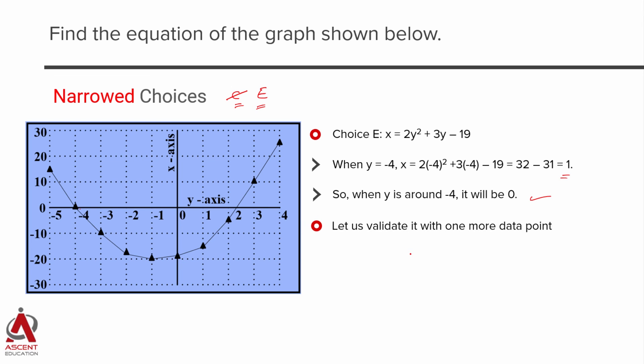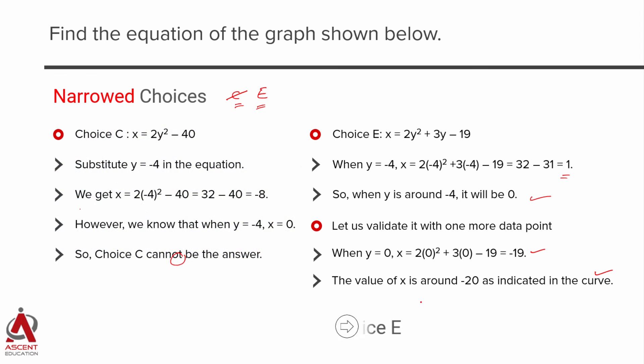Second point I am going to use to validate is I am going to take y is equal to 0. Substitute y is equal to 0, I am getting a number which is minus 19. This is approximately minus 20, so again it looks like we are on the right track. So basically both these points validate what we want. So what should be the answer? Answer is choice E.